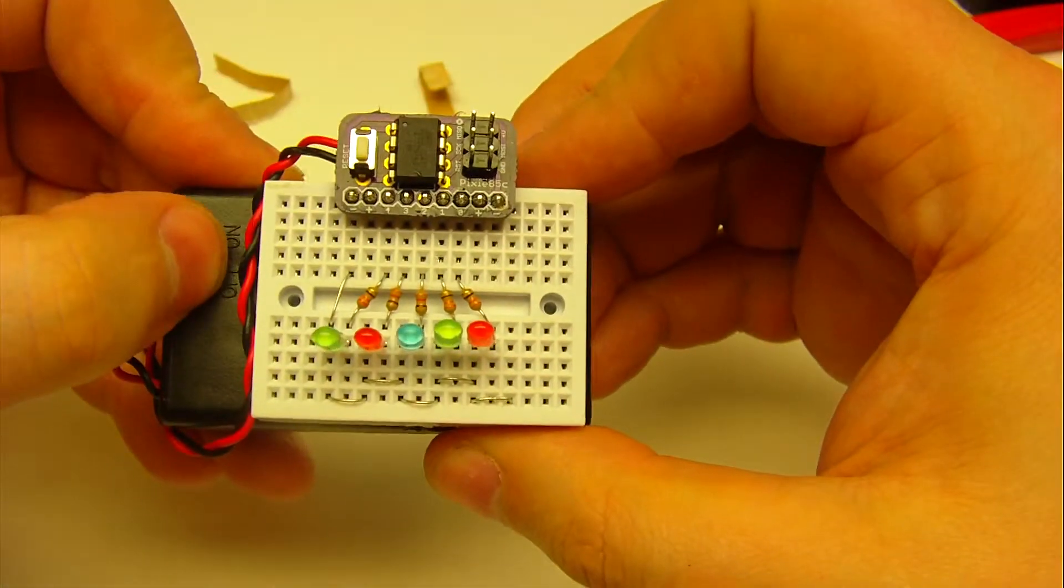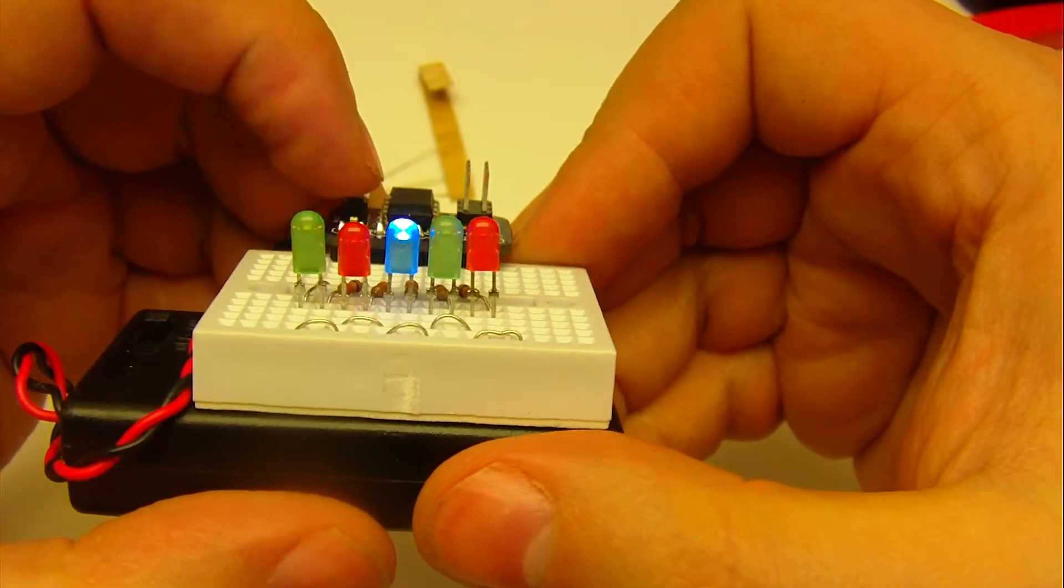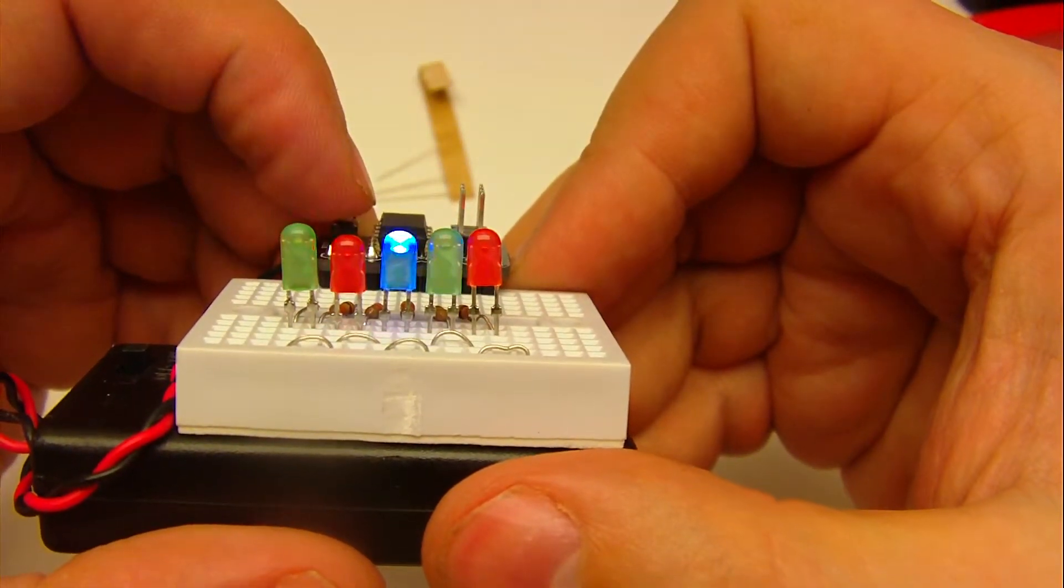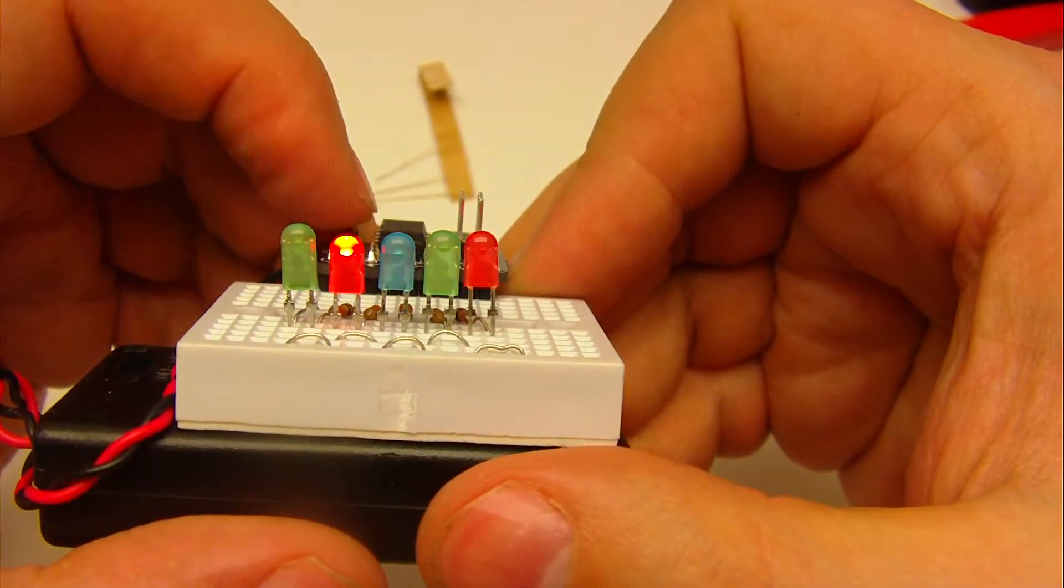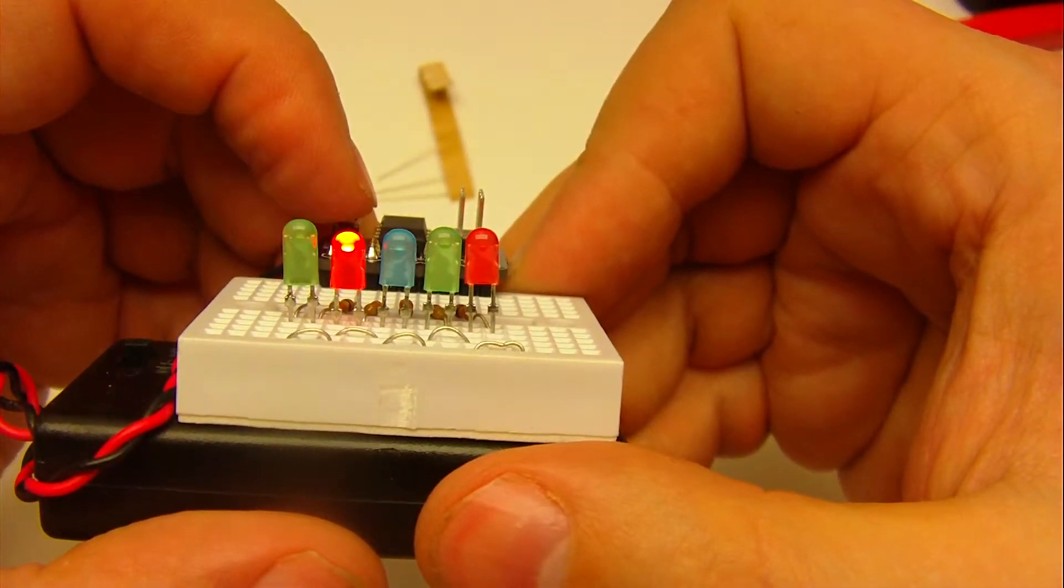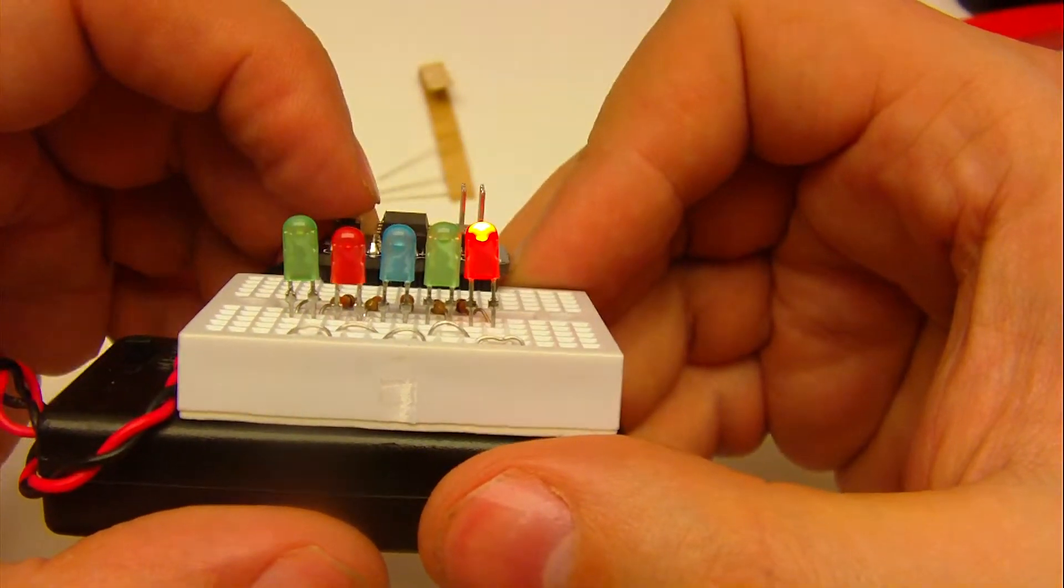And there I have all my pretty colors. And now if I turn this on and hit my button, I can cycle through all the modes, just like the penta blinky circuit port.